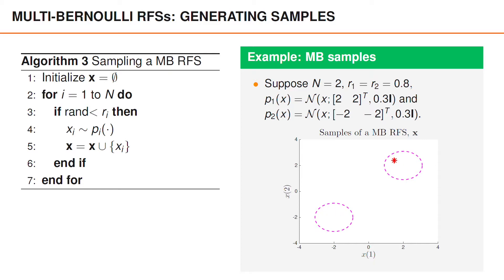The fact that the vectors are not identically distributed is an important difference compared to the Poisson point process. In spite of this, I understand if you find the multi-Bernoulli processes similar to the Poisson point process. You might ask yourself what the differences are and how they are related.